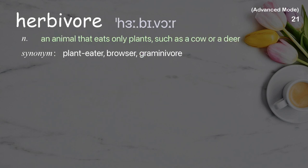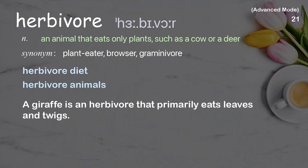Herbivore: An animal that eats only plants, such as a cow or a deer. Examples: A giraffe is an herbivore that primarily eats leaves and twigs.